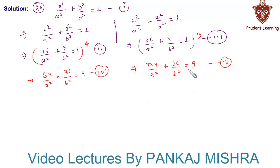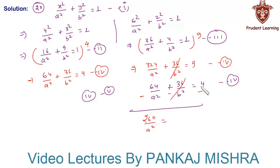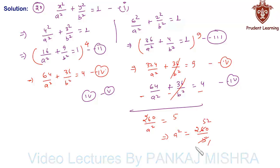Now we subtract equation 4 from equation 5. Writing equation 4 under equation 5: the 36 over b² terms cancel each other. Then 324 over a² minus 64 over a² gives 260 over a² equals 9 minus 4, which is 5. This implies a² equals 260 over 5. Since 5 times 52 is 260, we get a² equals 52.